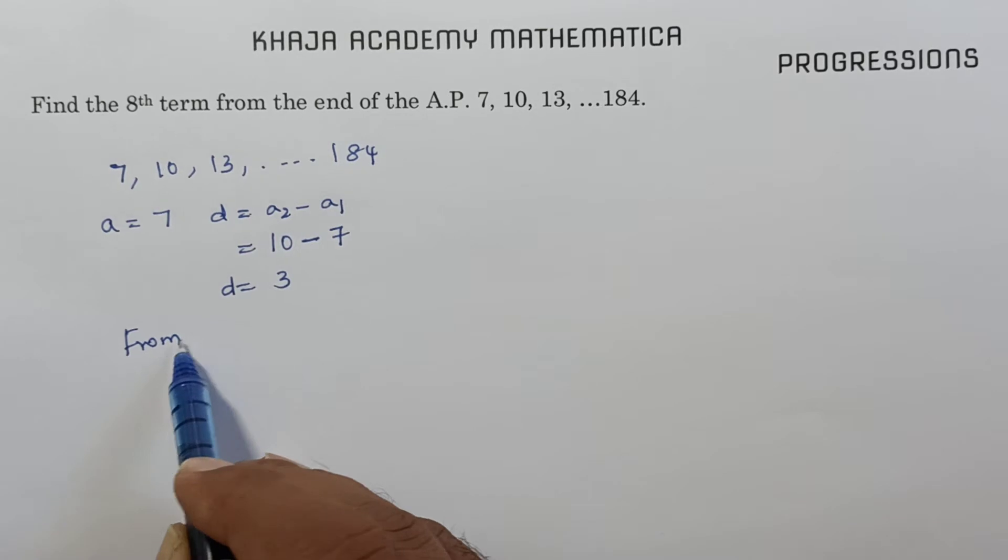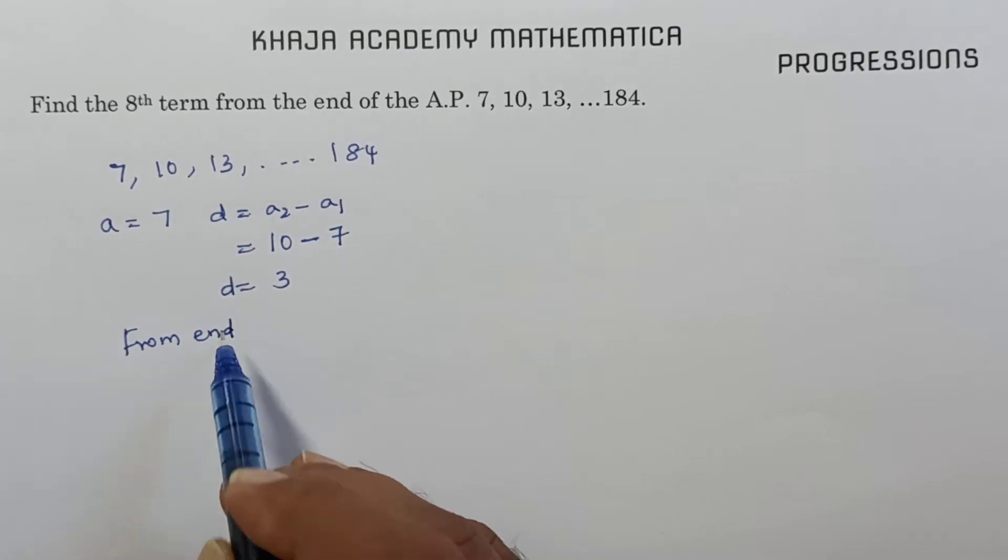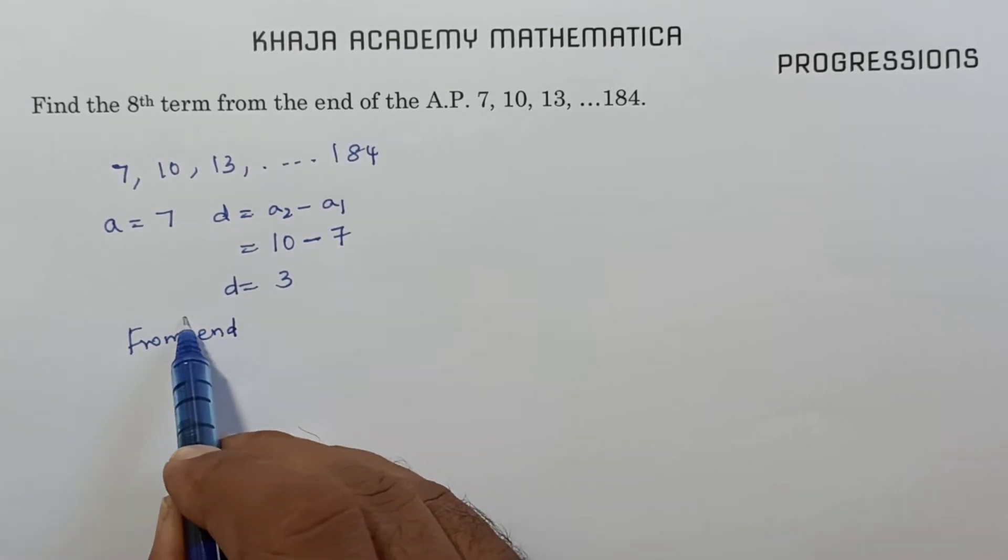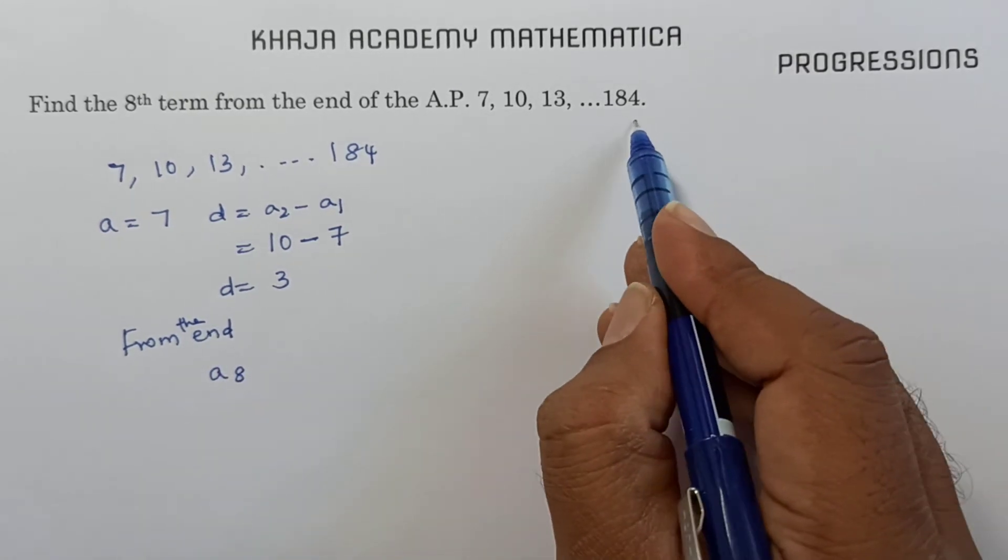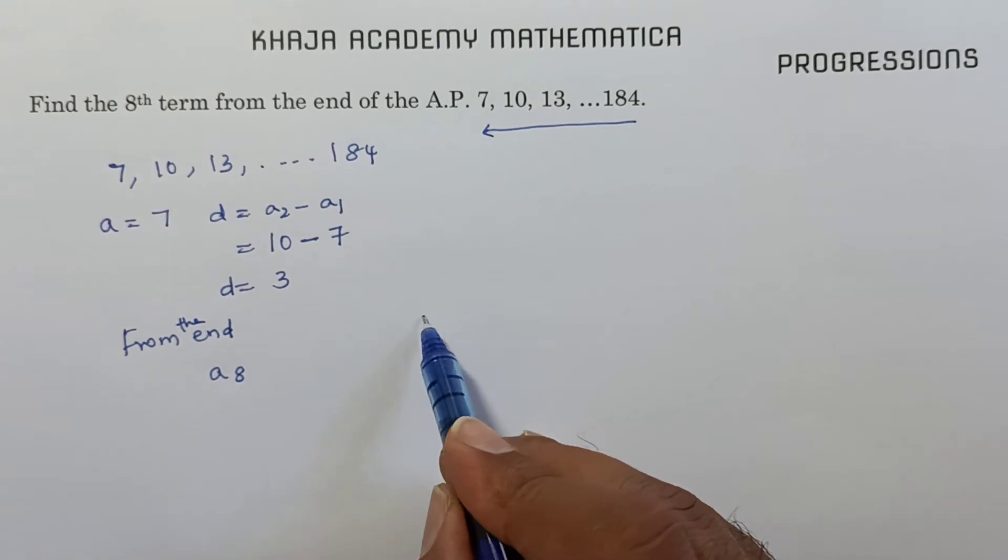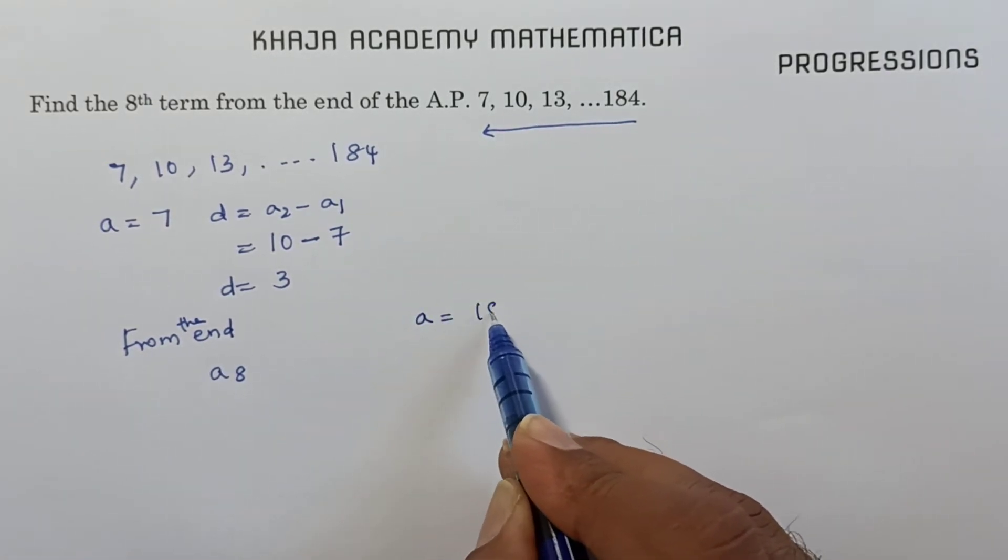But from the end, they want the 8th term from the end. So from the end, if you do 8th term, before that, from the end, if you start the series from here, what will be the first term? First term will be 184.